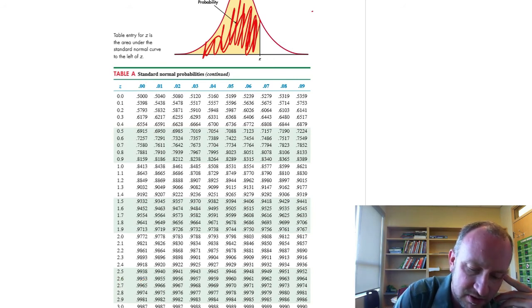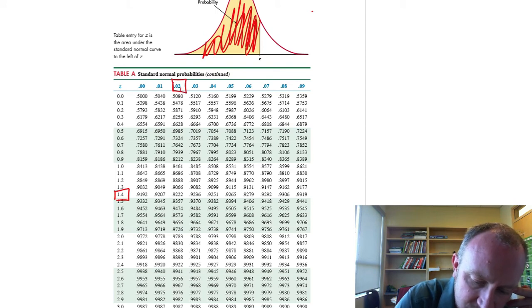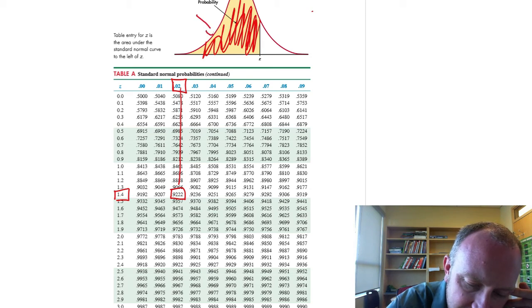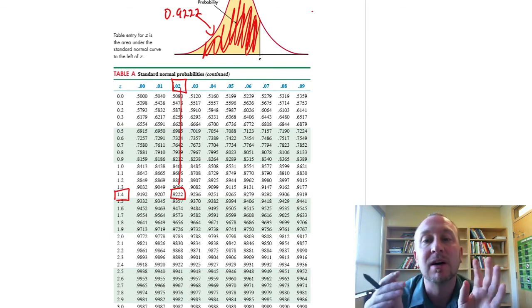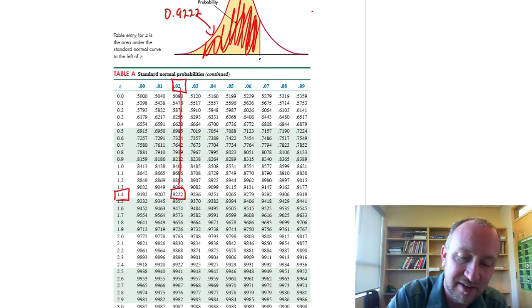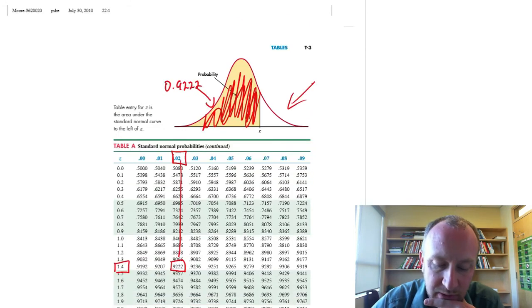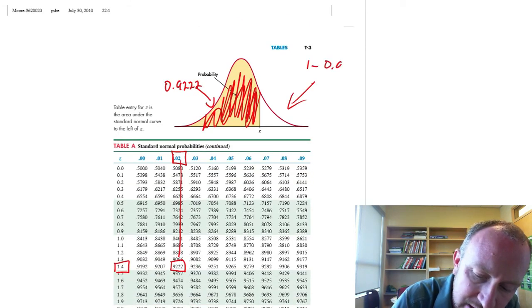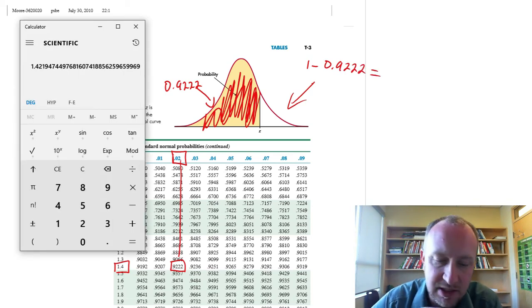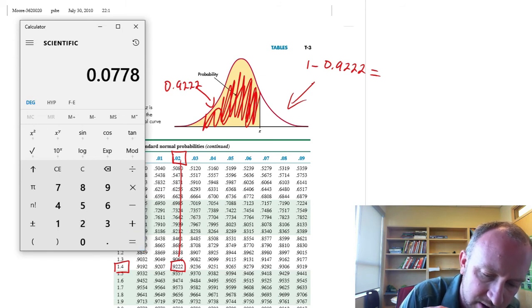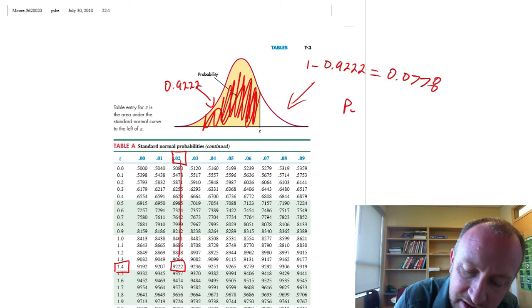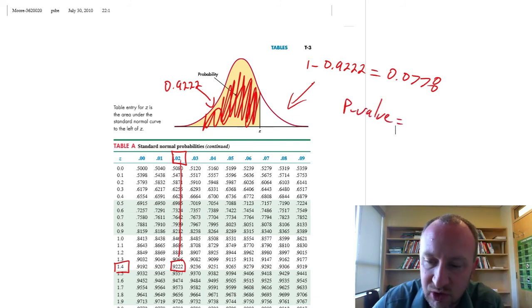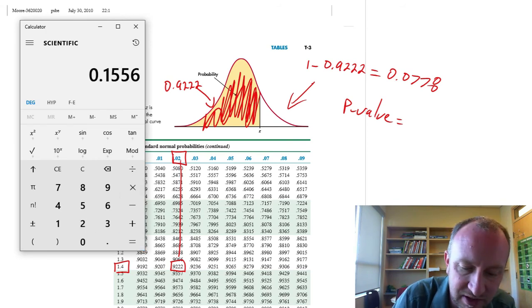My Z statistic is 1.42. That comes down to here at 0.9222. Well, this is, don't forget, a two-tailed test, so that's not the probability we want. We want whichever probability is the smaller between the left side or the right side, and then we multiply that by 2. So what I need here is 1 minus 0.9222, 0.0778. And our p-value, remember this is a two-tailed test, so our p-value is equal to twice that value times 2, so 0.1556.